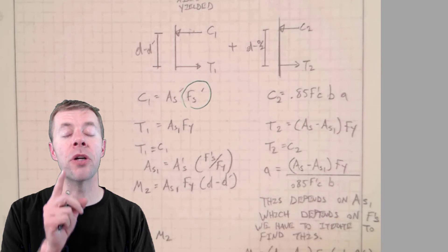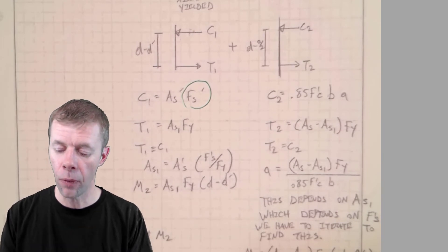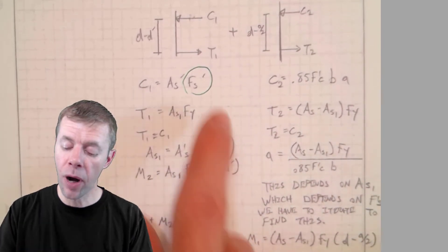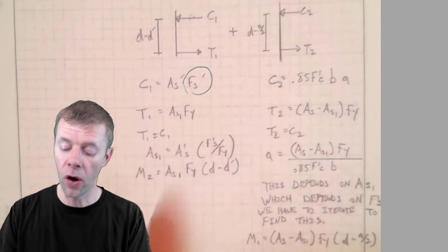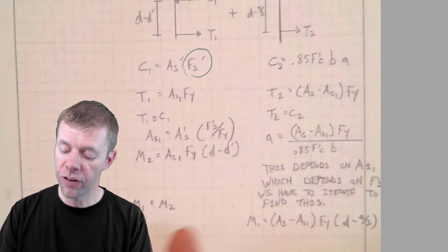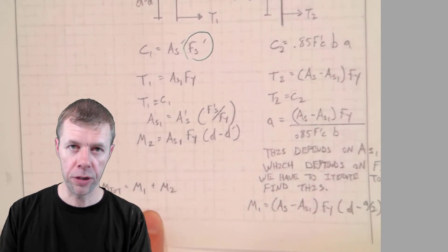No worries. I'm going to show you an example problem where we do this in great detail. But after we do the iteration, it's not that hard. After you get F'S correct, it's not hard. It's just plug and chug and you go through and you find your moment here, you find your moment here and you add them together and find total moment for your cross section.